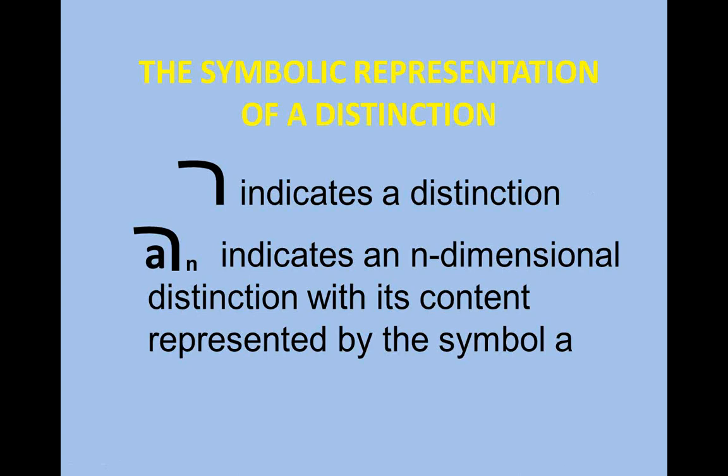A distinction is comprised of the relationship between three things: extent, content, and consciousness. Distinctions are represented symbolically as shown on this slide. The curved line tells you that we're talking about a distinction. If it has something under the curve, that indicates the content of that distinction. And the little n on the right-hand side represents the number of dimensions.